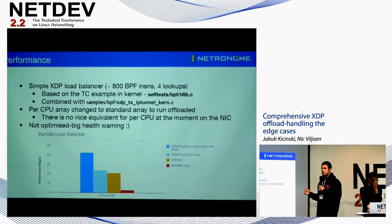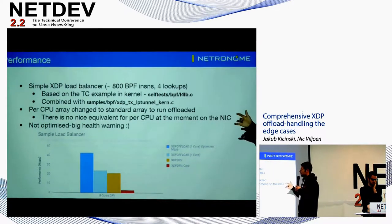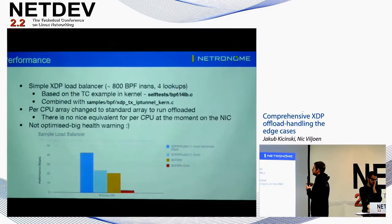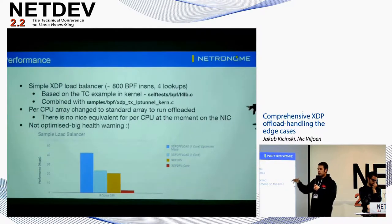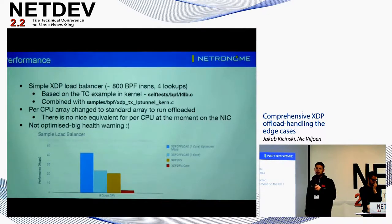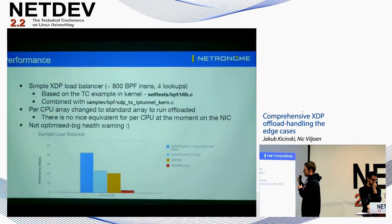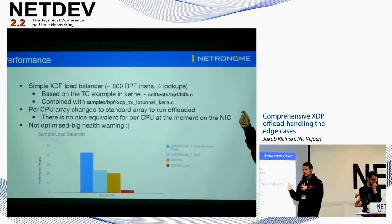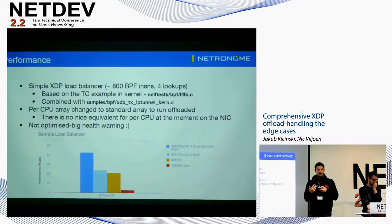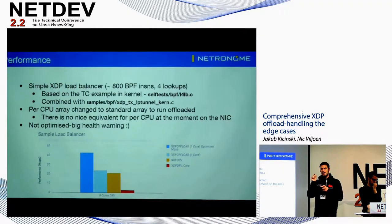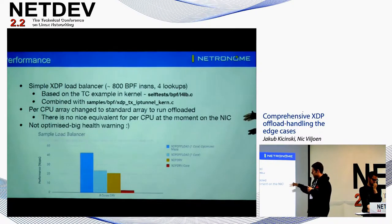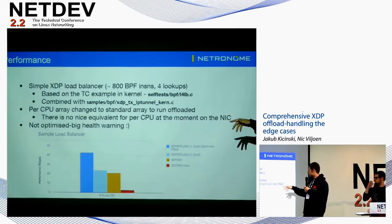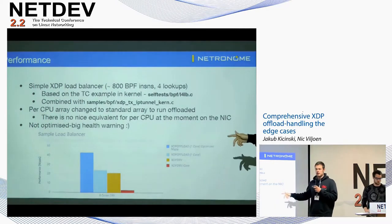For a performance example, I quickly hacked up a simple XDP load balancer — about 800 BPF instructions with four lookups — based on the TC example in the kernel at selftests/bpf/l4lb.c, combined with IP tunneling from XDP TX IP tunnel. It's not optimized. The one change needed to offload it was replacing a per-CPU array for stats with a standard array. Running it with offload in our POC, we got about 24 million packets per second, versus 21 million in the driver — about 2.6 million packets per second per core.